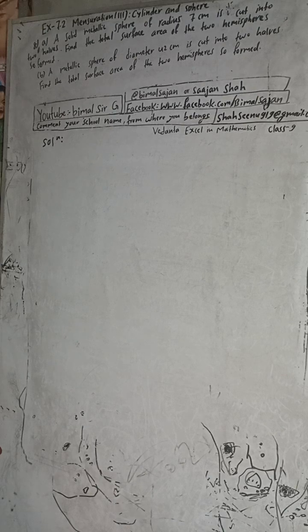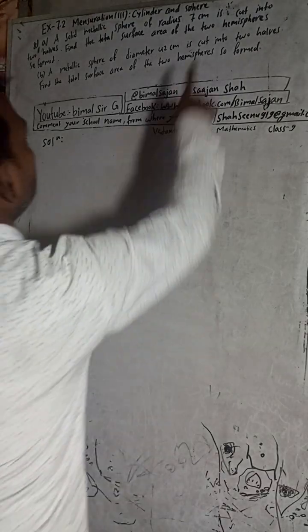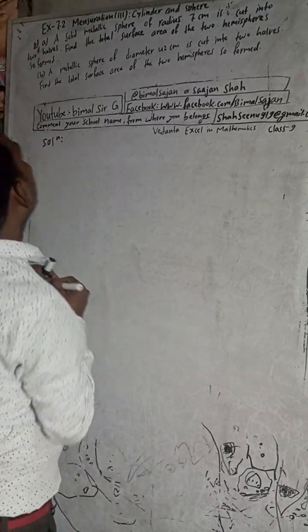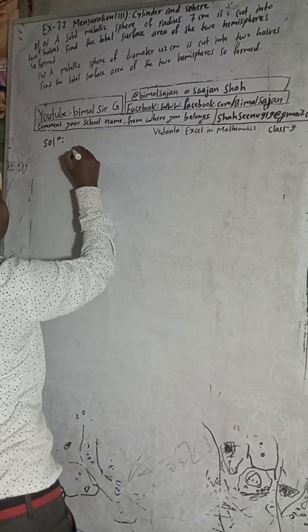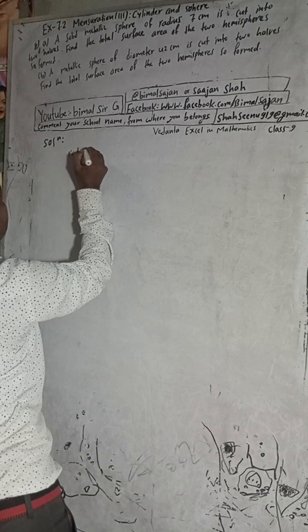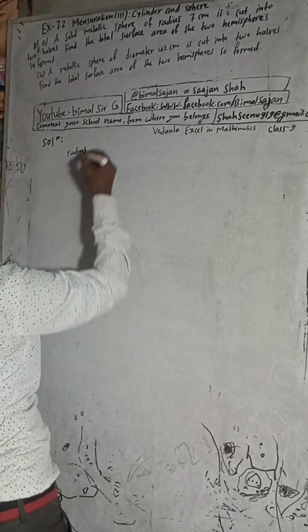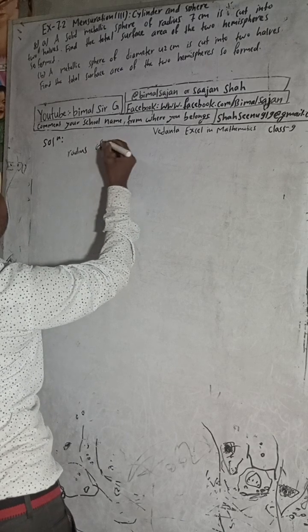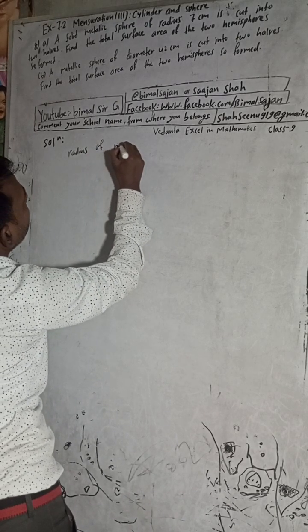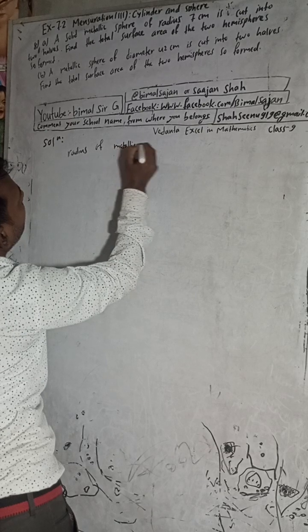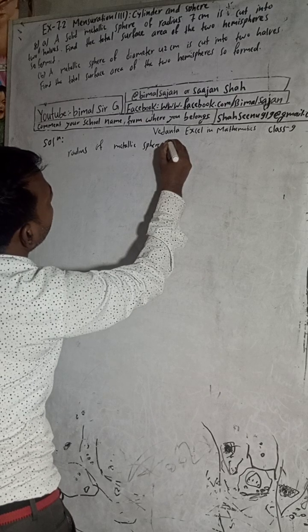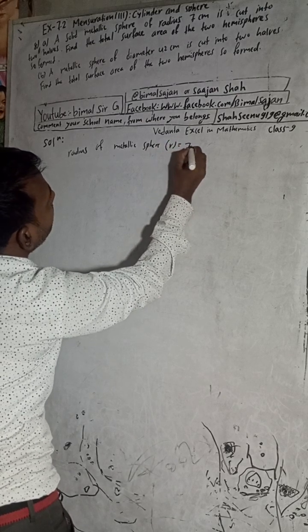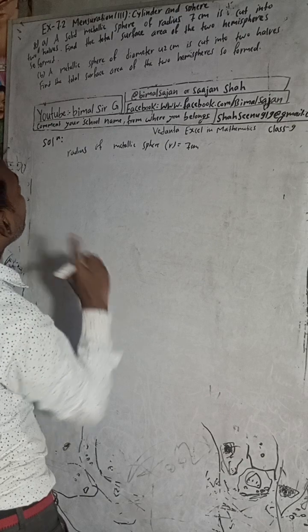Now I will start this solution. A solid metallic sphere of radius 7 cm is cut into two halves. Find the total surface area of the two hemispheres. So radius of metallic sphere is given here, 7 cm.